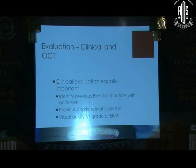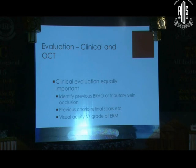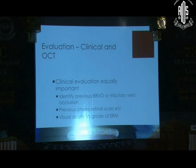When we evaluate these patients, we evaluate them both clinically and on OCT. Clinical evaluation is equally important because on OCT you are concentrating just on the central part and more on the anatomical relationship of the membrane vis-à-vis the retina and the RPE. We are also interested in knowing what caused the epiretinal membrane because that has a bearing on visual recovery. We look for evidence of branch retinal vein occlusions, but tributary vein occlusions can be missed because the sheathed vessel can be camouflaged by the epiretinal membrane.